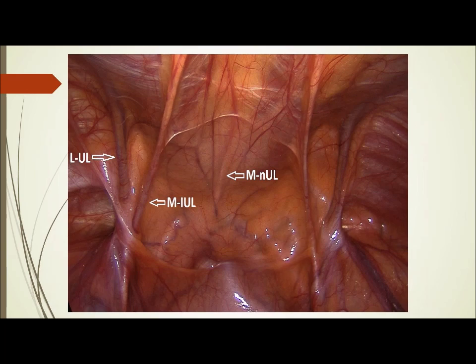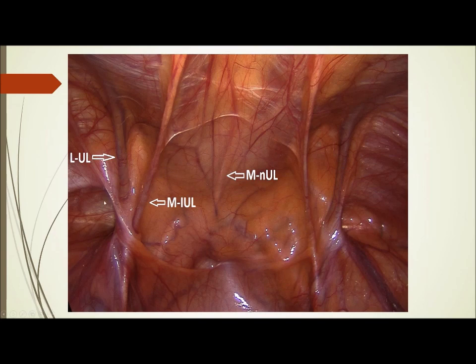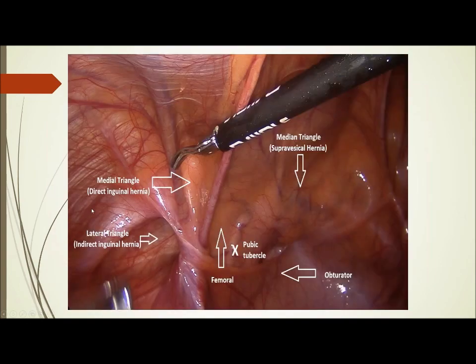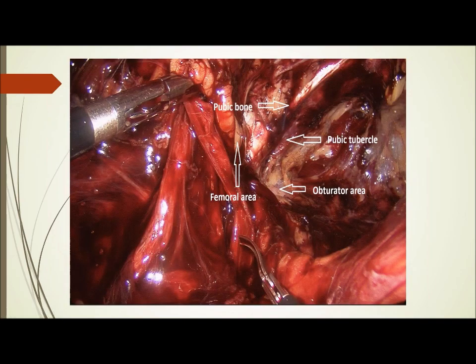This is a laparoscopic view of what is seen from inside. The pubic symphysis is visible. The medial fold - the obliterated umbilical artery - the ML ligament, and the inferior epigastric can be clearly seen. Here you can also see the deep inguinal ring. These are the three triangles - supravesical, medial, and lateral - along with the pubic tubercle, the obturator area, the femoral area, and the triangle formed by the vessels and the vas deferens.